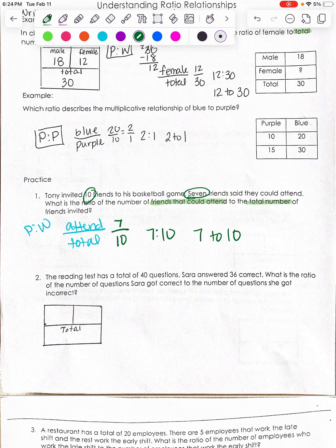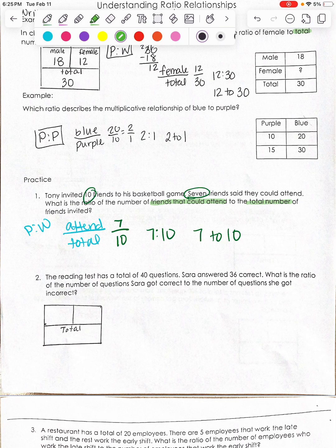The reading test has a total of 40 questions. Sarah answered 36 correct. What's the ratio of the number of questions Sarah got correct to the number of questions she got incorrect? So I'm looking for the ratio of the number of questions she got correct to incorrect.